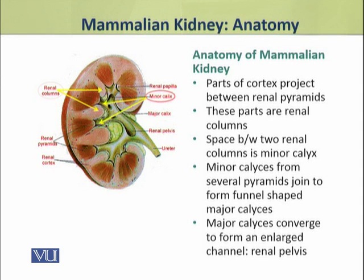Several minor calyces associated with the pyramids join together to form a funnel-shaped structure called a major calyx. Multiple major calyces converge and form a large, enlarged channel which is called the renal pelvis.